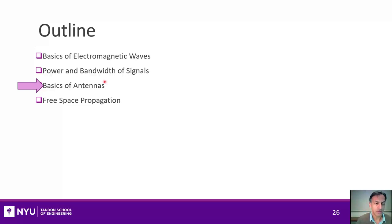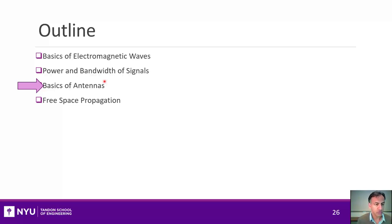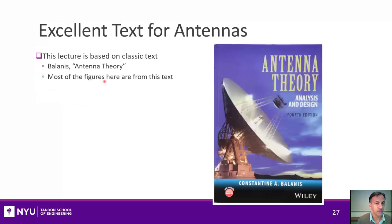Now that we've reviewed a little bit about signals and systems, we can move on to talking about the basics of antennas — the basic device for transmitting and receiving wireless signals.